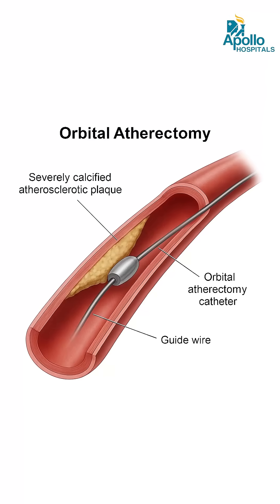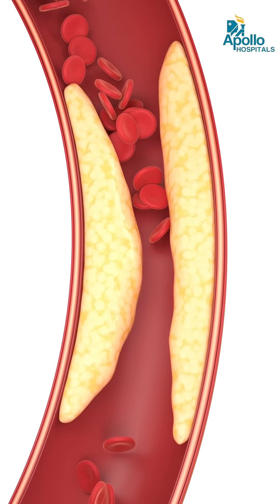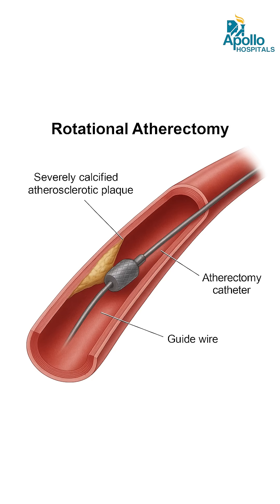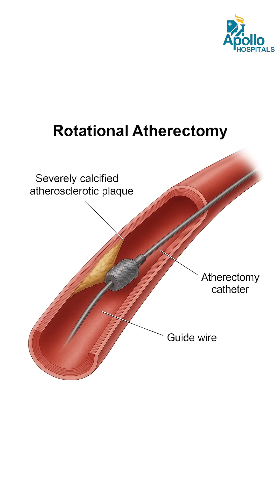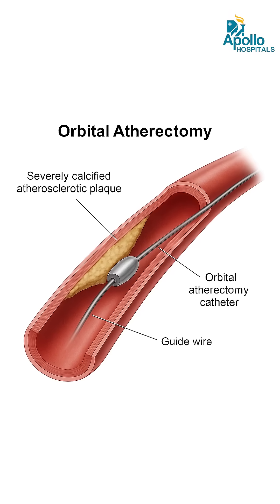Usually a long calcium spur is better treated with rotablation. A short calcium spur in a large artery is better treated with orbital atherectomy.